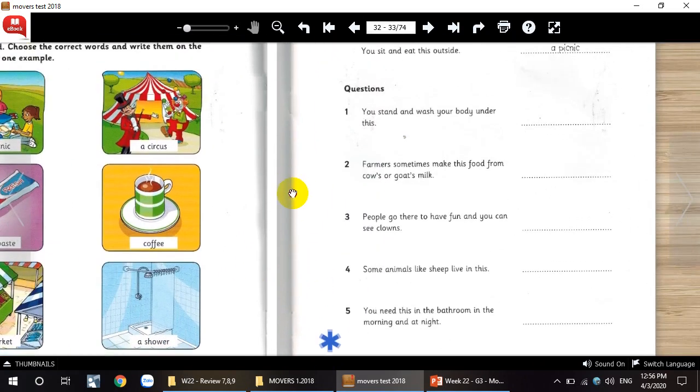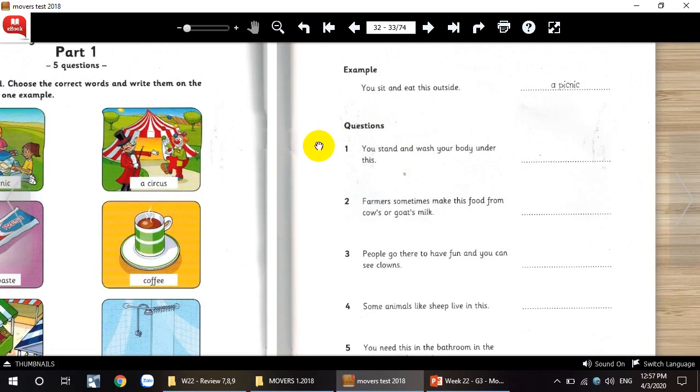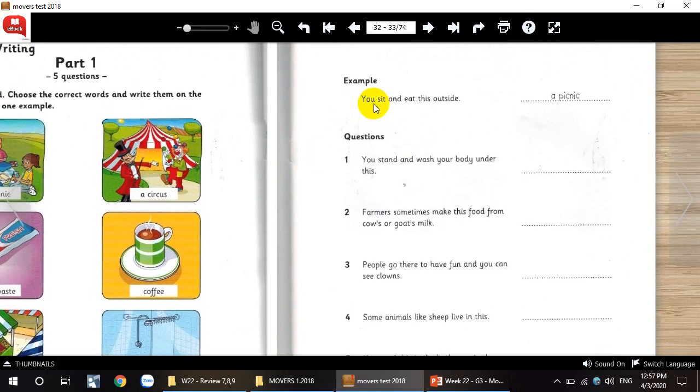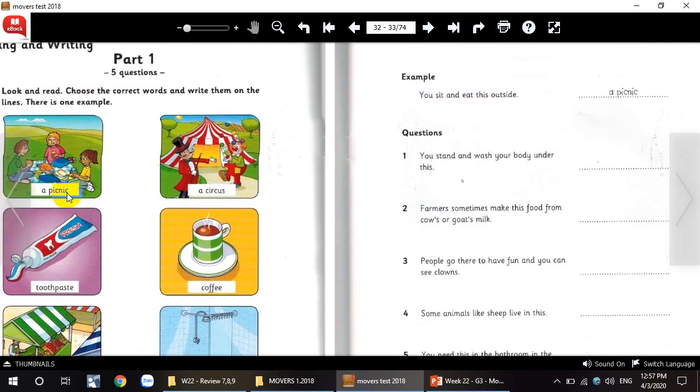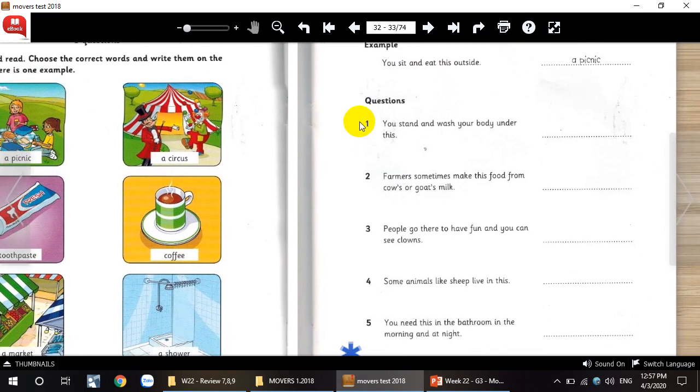Let's take a look at these questions. First, look at the example. You sit and eat this outside. Where you sit and eat this outside? A picnic. Okay, and the other questions. Please do it at home, right? Let's move on to the next part.